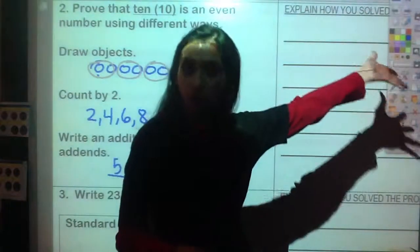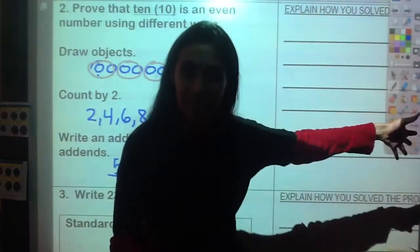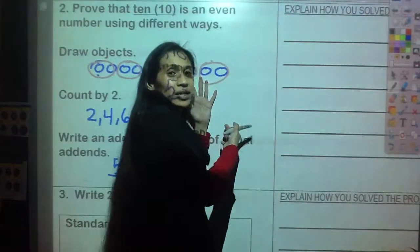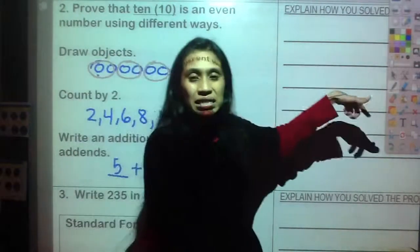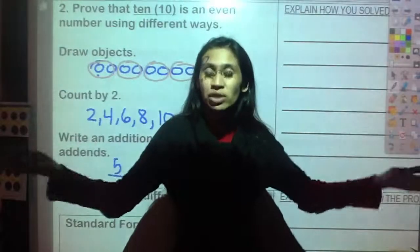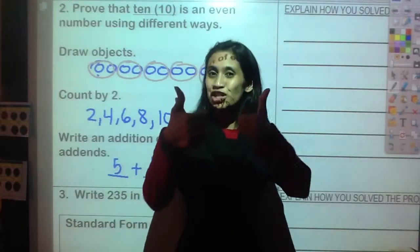On the right side where it says 'explain how you solve the problem,' write sentences to describe what we just did. We just did it right here, so all you have to do is write sentences to tell me what you did to solve that problem. Got it? That's number two.